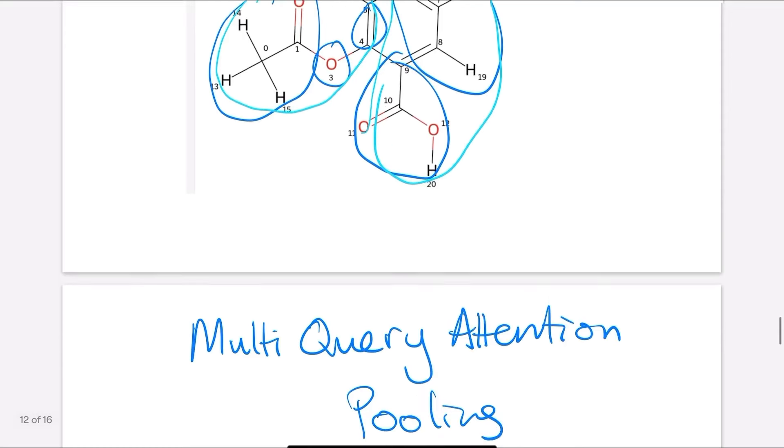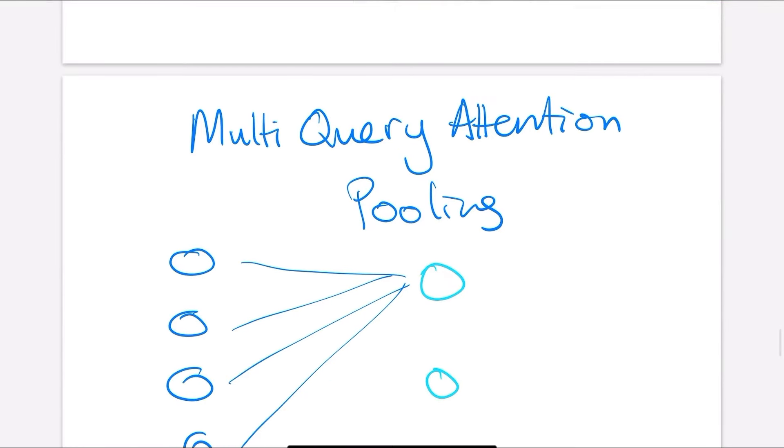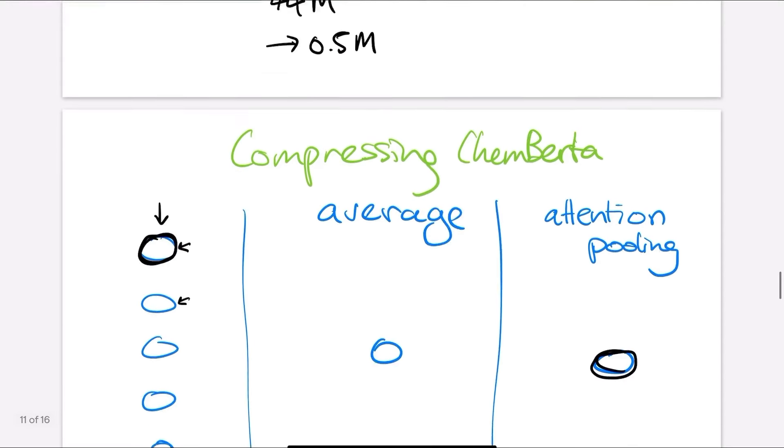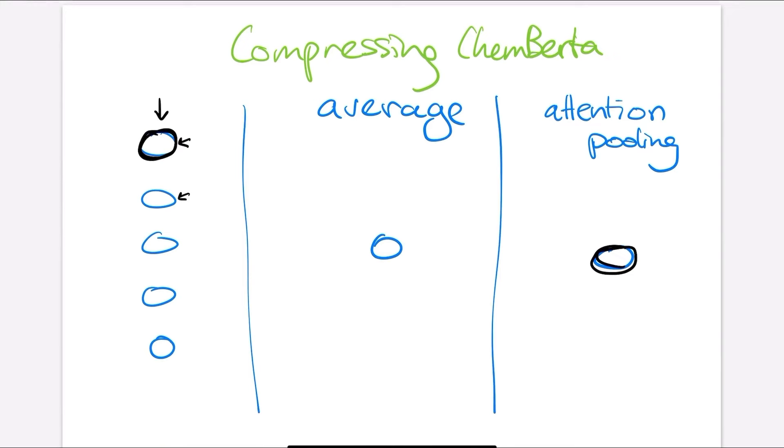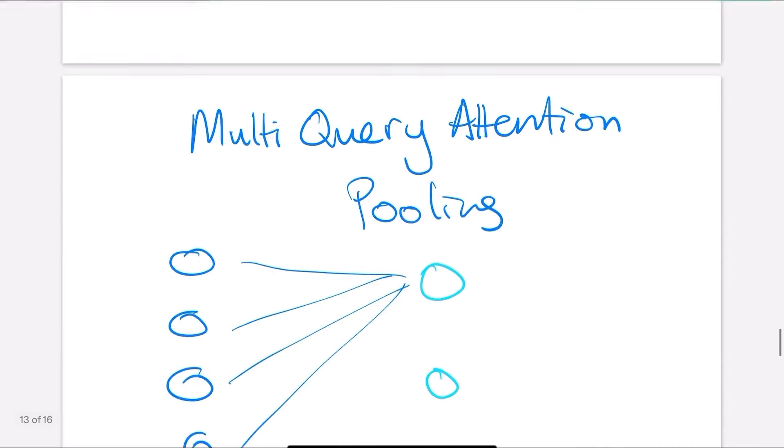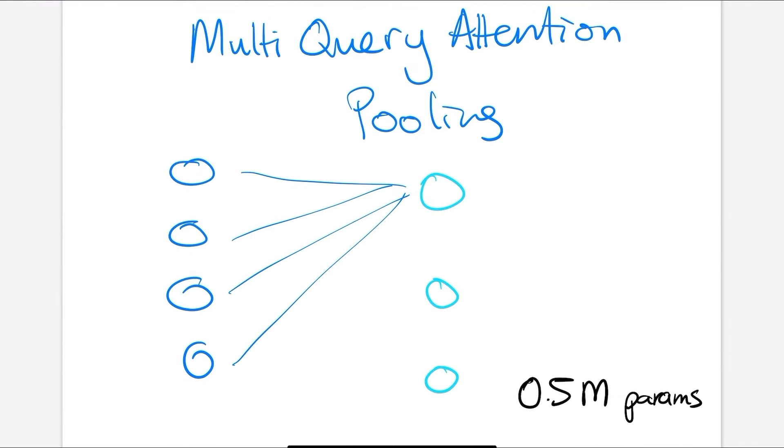So we came up with a, I think, novel mechanism that we called multi-query attention pooling. So it's very similar to the attention pooling here, where you look into each of the parts of the molecule and decide how much to weigh them. But instead of just doing it once, we do it for each possible fragment. And so each fragment kind of decides which parts of the molecule it wants in it. This isn't the same as just like regular attention, which required about 5 million parameters, because this only required about 0.5 million parameters. So it's quite efficient. And this was by far the model that trained the best.